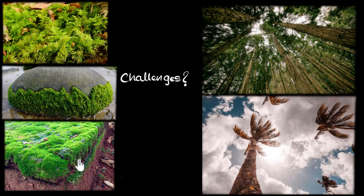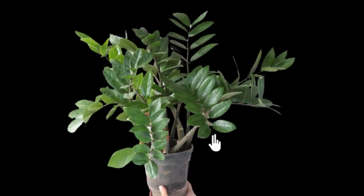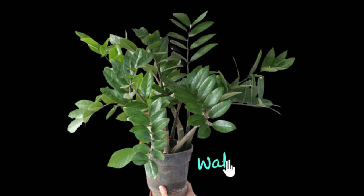The biggest challenge that these early plants faced was a lack of a transport system. What's a transport system and why do plants need one? Consider a house plant — in order for it to stay alive, all parts of it require food, water, and minerals so they can grow. Most of the water and minerals are available in the soil.